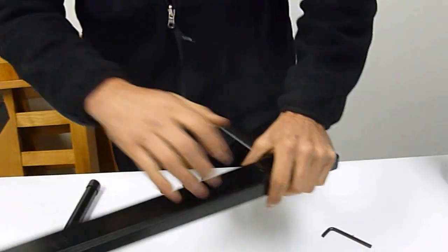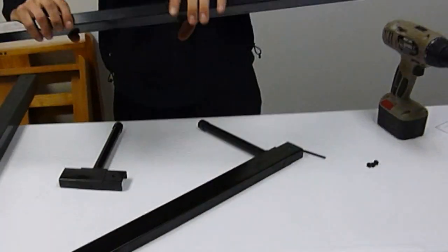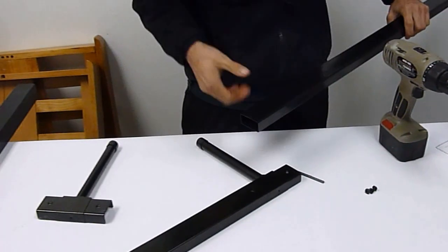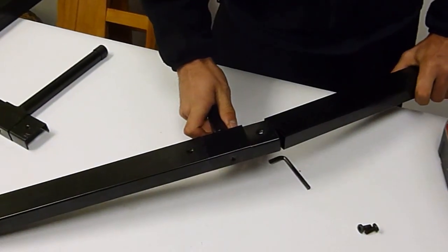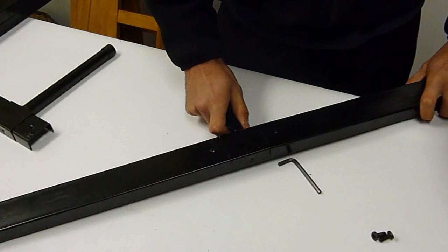Just slide the T-connector right into the rail. Like so. And take another rail, wherever the hole is, make sure that's facing you. Attach that in there likewise.